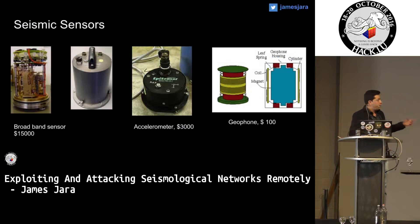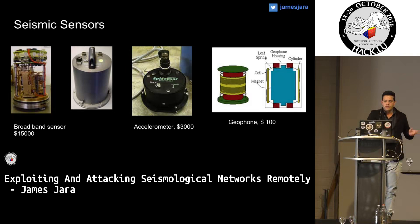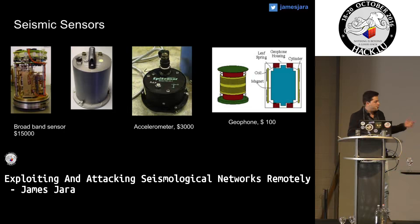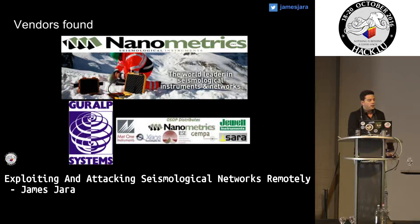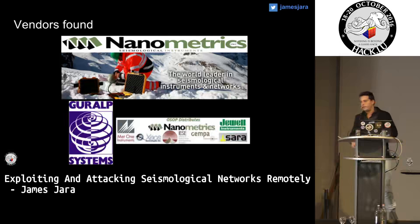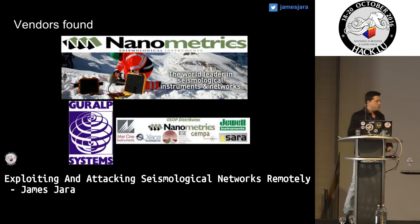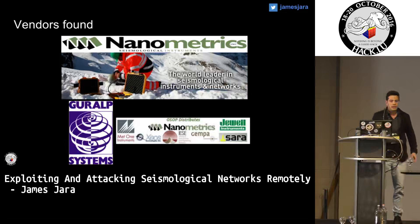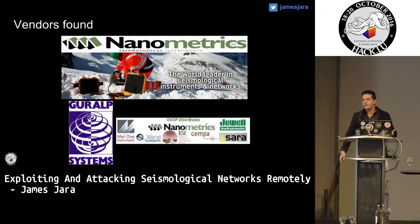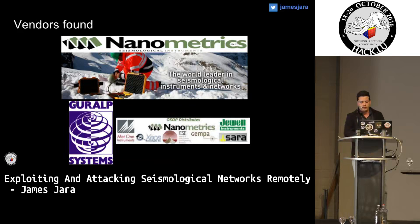This is how the sensors look — they are really small. We have the broadband sensor, the accelerometer, and the geophone. The main vendors in this space are nanometrics, which claims to be number one in the industry, and Güralp Systems. Our research is focused on these two vendors.